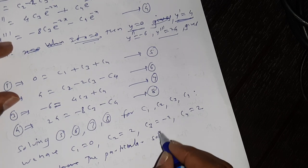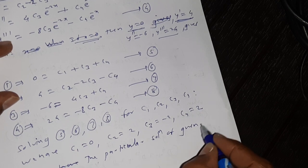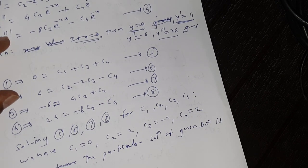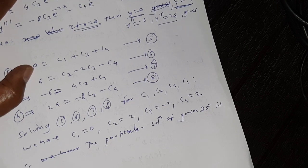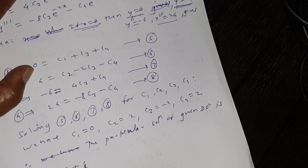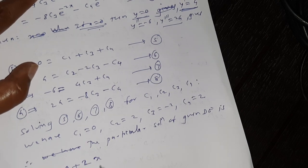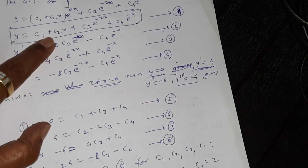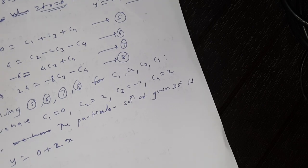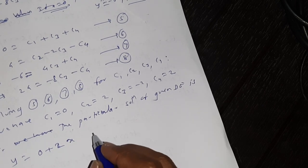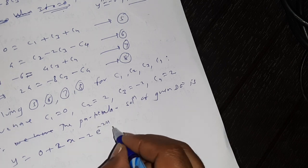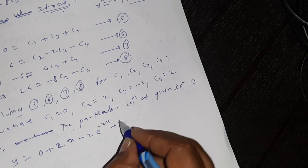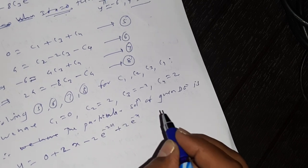Therefore the particular solution of the given differential equation is: y = 0 + 2x - 2·e^(-2x) + 2·e^(-x).